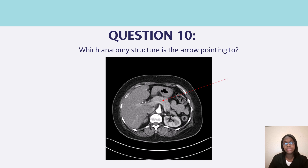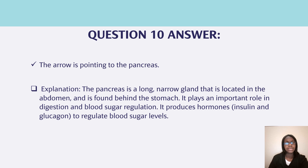Question ten, which anatomy structure is the arrow pointing to? The arrow is pointing to the pancreas. The pancreas is a long, narrow gland located in the abdomen behind the stomach. It plays an important role in digestion and blood sugar regulation. It produces the hormones insulin and glucagon to regulate blood sugar levels.